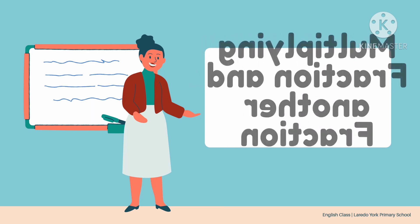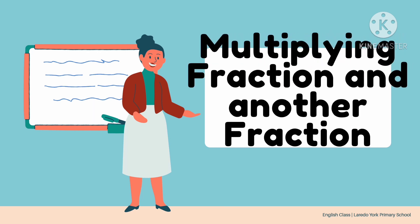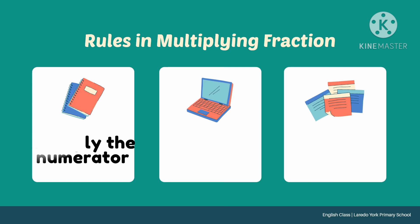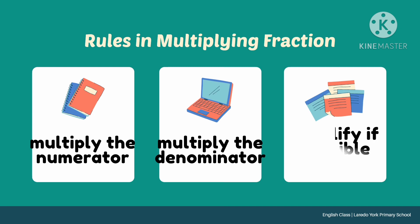Let's now proceed with multiplying fraction and another fraction. These are the rules in multiplying fraction. First, we multiply the numerator. Then multiply the denominator and simplify your answer if possible.